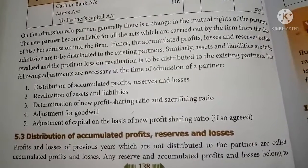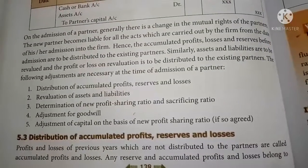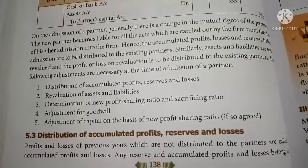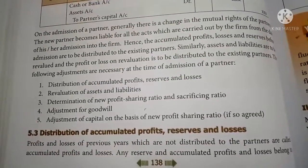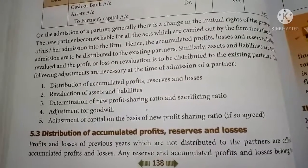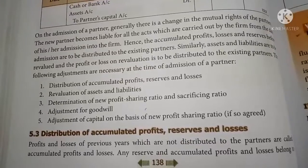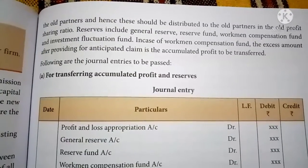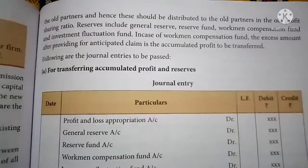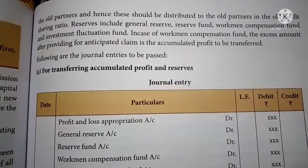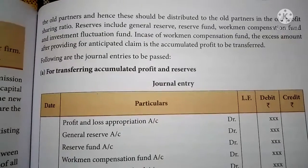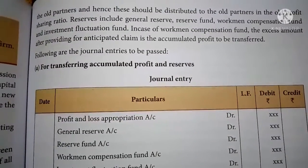Profit and loss of the previous year which are not distributed to the partners are called accumulated profit and losses. If any profit or loss which has not been distributed to the existing partners before the admission of a new partner, that undistributed profit or loss is known as accumulated profit and loss. Any reserve and accumulated profit and losses are to be shared among old partners and hence these should be distributed to the old partners in the old profit sharing ratio. Reserves include general reserve, reserve fund, workman compensation fund, and investment fluctuation fund. These are also to be distributed to the old partners' capital accounts in the old sharing ratio.